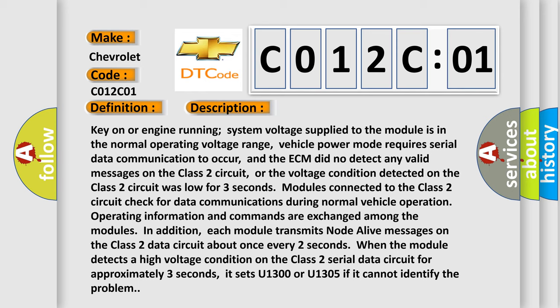In addition, each module transmits node alive messages on the Class 2 data circuit about once every two seconds. When the module detects a high voltage condition on the Class 2 serial data circuit for approximately three seconds, it sets U1300 or U1305 if it cannot identify the problem.